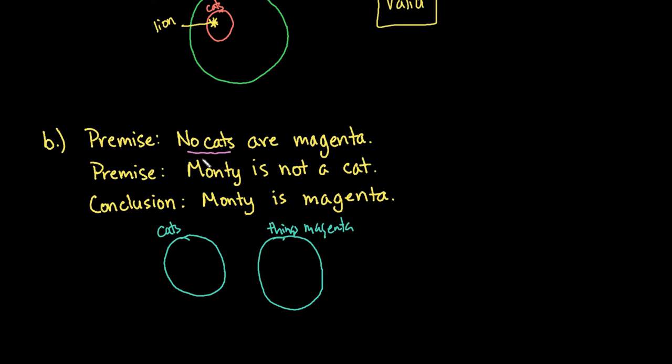And then we have a second statement that says Monty is not a cat. So we know that Monty could be outside of here, but it could also fall inside of things that are magenta. So all we know is that Monty is not a cat, so he can't be in this circle. And so our conclusion, Monty is magenta, is going to be an invalid statement because of the fact that it is possible that Monty could be magenta. But the only thing that we do know for sure is that he is not a cat, so he could be inside of things that are magenta or it could be something that is outside of magenta and outside of cats.